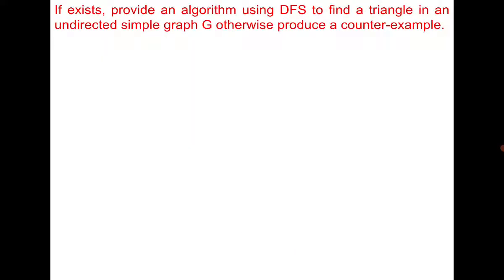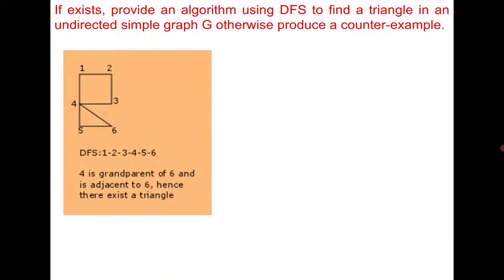The last question says: provide an algorithm using DFS to find a cycle of length 3 in an undirected simple graph G, or produce a counter-example. First think about how DFS can be used to find a triangle in a simple graph G, and also whether this technique works for all graphs. Let me give you an example: if I consider this graph, there is a triangle formed by vertices 4, 5, and 6.